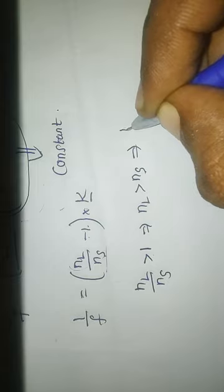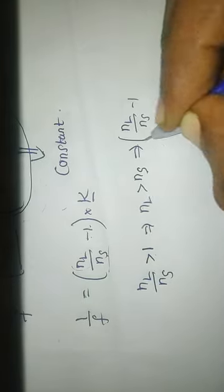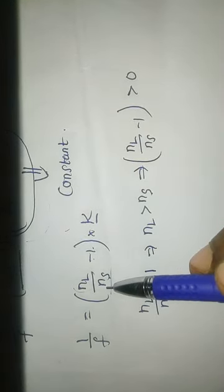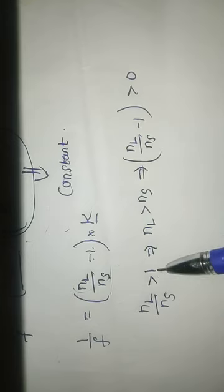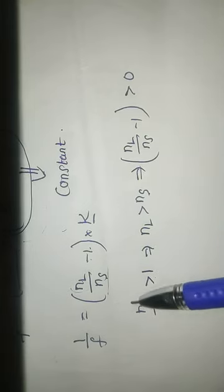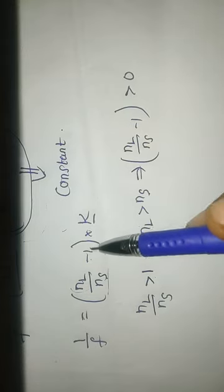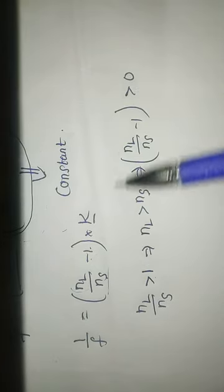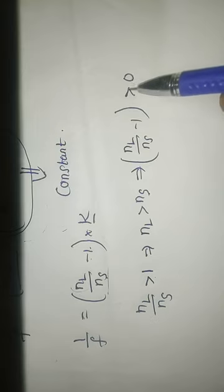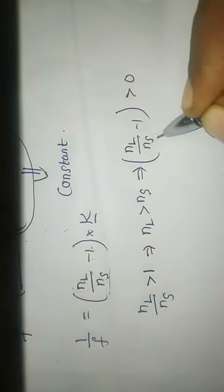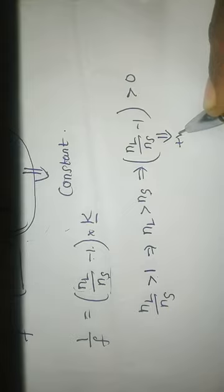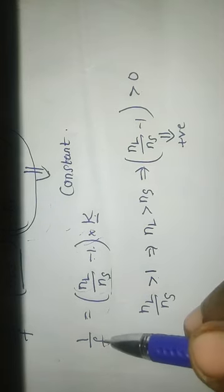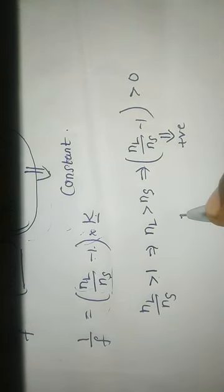NL/Ns − 1 should be greater than 0. Because NL/Ns is greater than 1, subtracting 1 from a number greater than 1 obviously gives a result greater than 0. So the entire term NL/Ns − 1 is greater than 0 — it is a positive number. Since this entire term is positive and (1/R1 − 1/R2) is also positive (constant), the entire right-hand side becomes positive. So f will also become positive — f is positive, meaning the lens is a convergent lens.